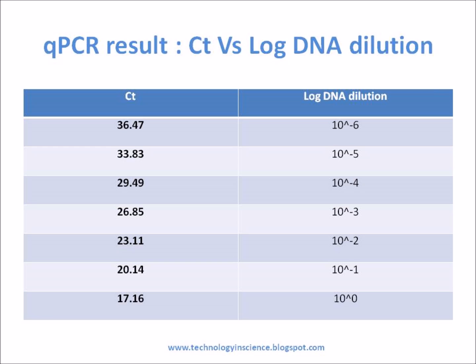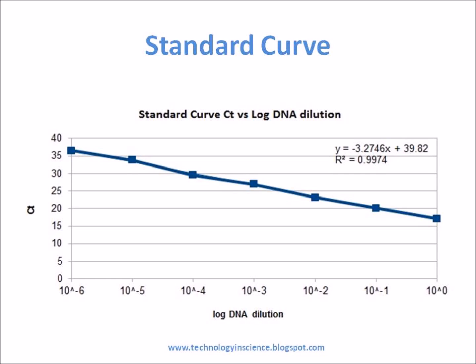The standard curve is generated by plotting the log of the starting quantity of template against the cycle threshold value obtained during amplification of each dilution. Below is the standard curve graph generated using the data obtained after the PCR run, where CT value is plotted against log DNA dilution.